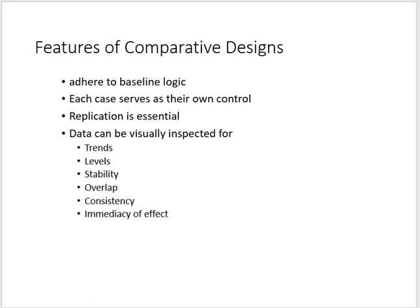These are the general features that apply to all comparative designs addressed in this module. There is adherence to baseline logic, and each case serves as their own control. Replication is essential, and data can be visually inspected using our six methods of visual analysis for trend, level, stability, overlap, consistency, and immediacy of effect.